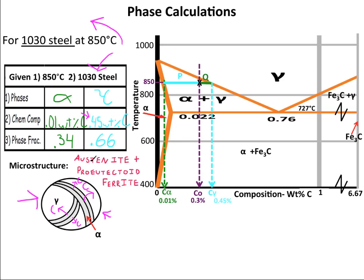This makes gamma's weight percent carbon increase from the overall composition, as we can see right here. We call this microstructure austenite and pro-eutectoid ferrite — the austenite being the gamma, the ferrite being the alpha, and pro-eutectoid meaning that the alpha came out before the eutectoid temperature. Notice that the phase fractions are similar but not exactly the same as the areas in the microstructure drawn here.